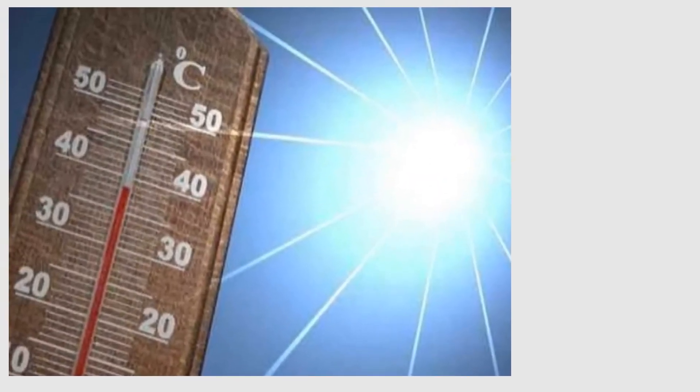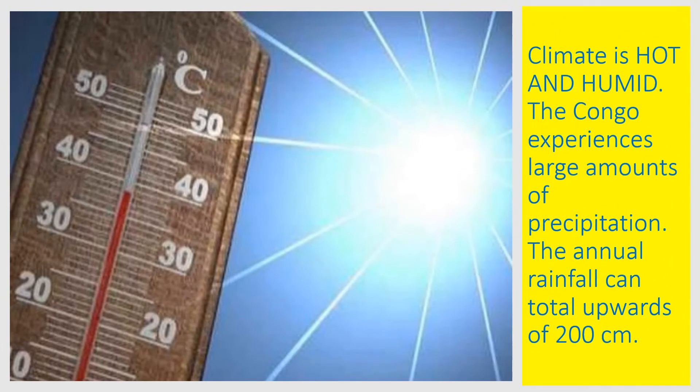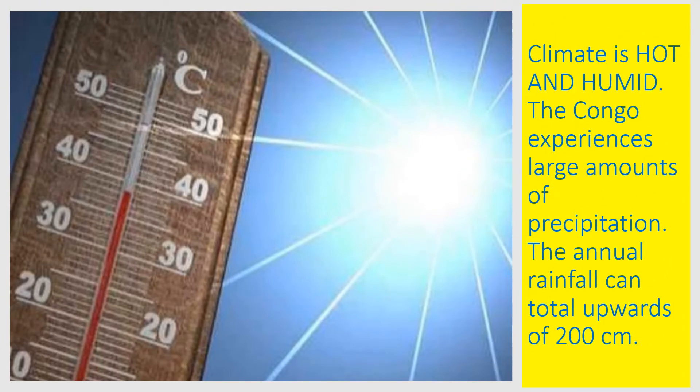Now I am going to discuss with you the climate of the country. The climate is very hot and humid. There is enough sunshine and rainfall in this region. The air is humid and the mornings are pleasant with bright sunshine. As a result of its equatorial location, Congo experiences large amounts of precipitation and has the highest frequency of thunderstorms in the world.